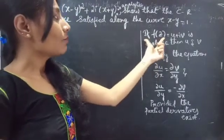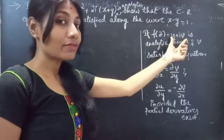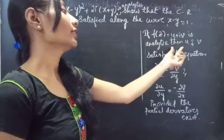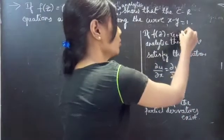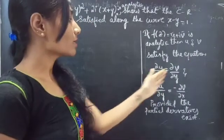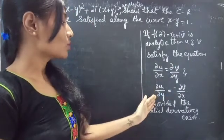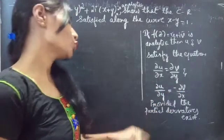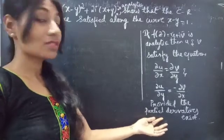If f(z) = u + iv, a complex variable, is analytic, then u and v satisfy the equations: ∂u/∂x = ∂v/∂y, and ∂u/∂y = -∂v/∂x, provided the partial derivatives exist.